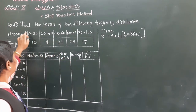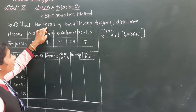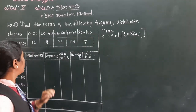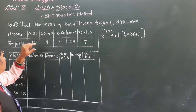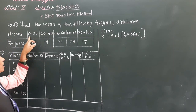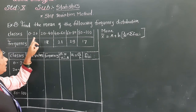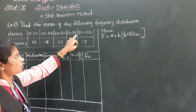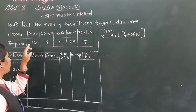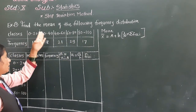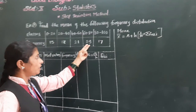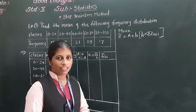Now we will see Example 5: find the mean of the following frequency distribution. The table gives classes and frequency: 0 to 20, 20 to 40, and so on up to 80 to 100. The frequency of each class is given as 15, 18, 21, 29, and 70.